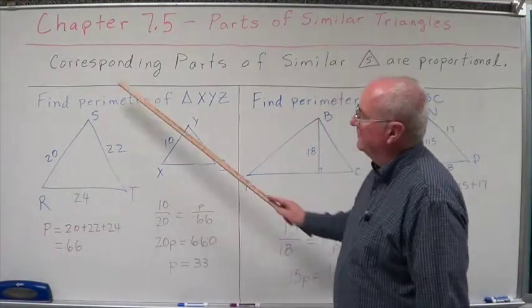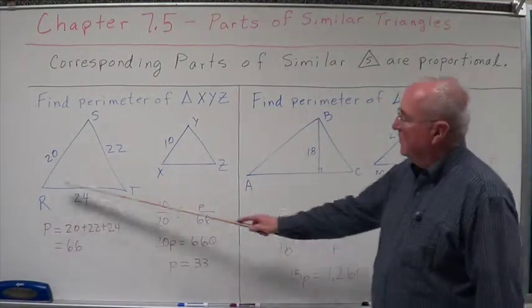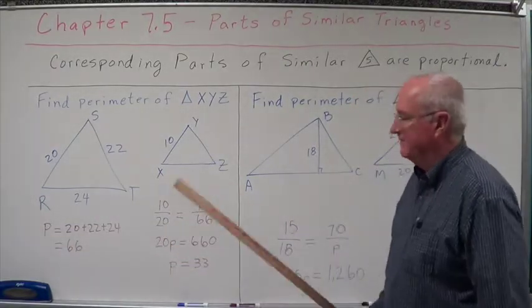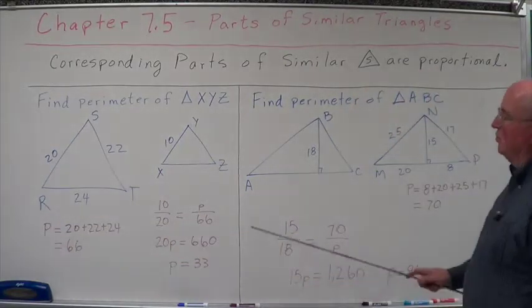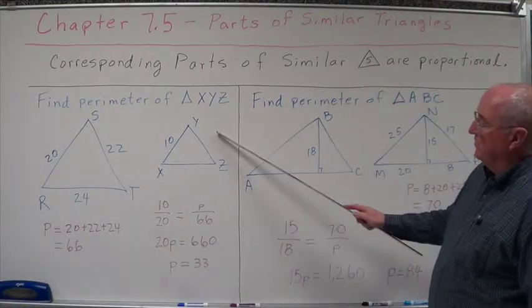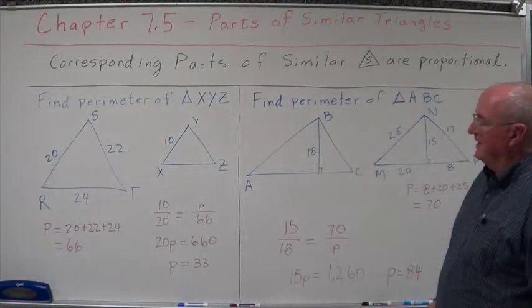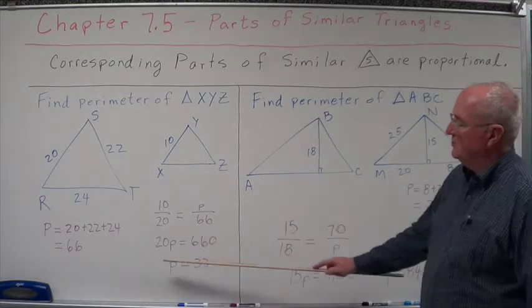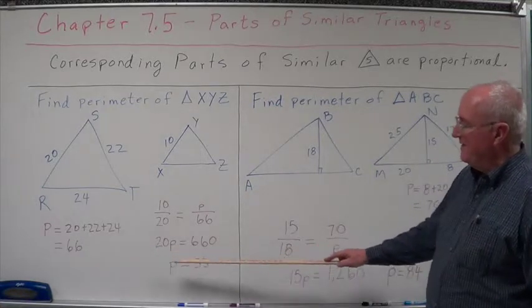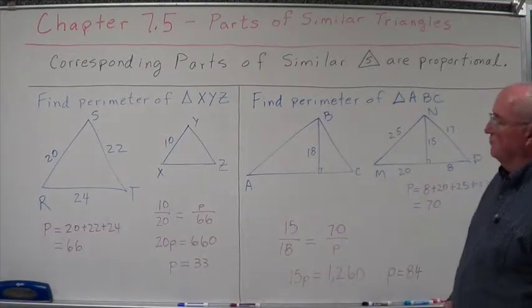What's the perimeter of triangle RST? Well, we add 20 plus 22 plus 24, and we come up with 66. Now let's set up our proportion. 10 is to 20 as the perimeter of this thing is to 66. During cross multiplication, 20P equals 660, divide by 20, P equals 33.